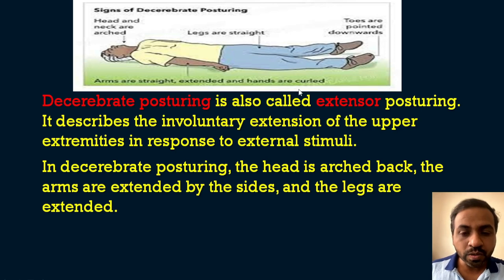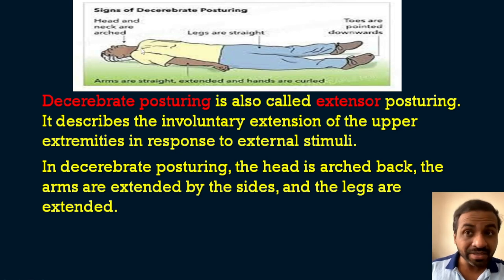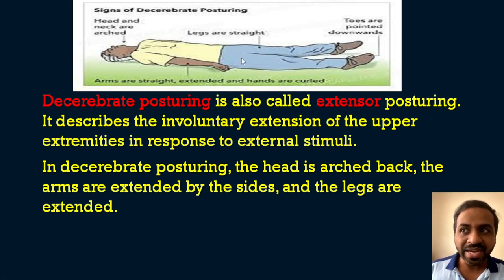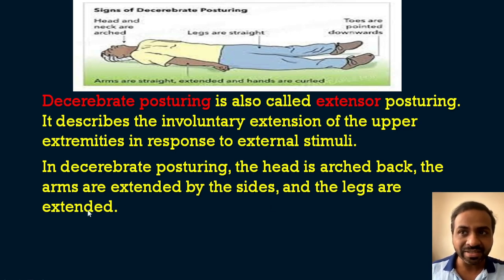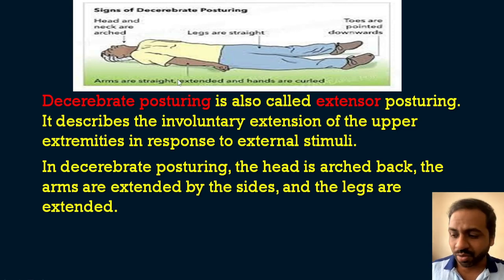Decerebrate posturing is also called extensor posturing. It describes the involuntary extension of the upper extremities in response to external stimuli. When giving painful stimuli over the sternal area or forehead, the patient assumes a decerebrating position — the head and neck are arched back, legs are straight and completely extended, toes point downward, arms are extended by the sides, and hands are curled.